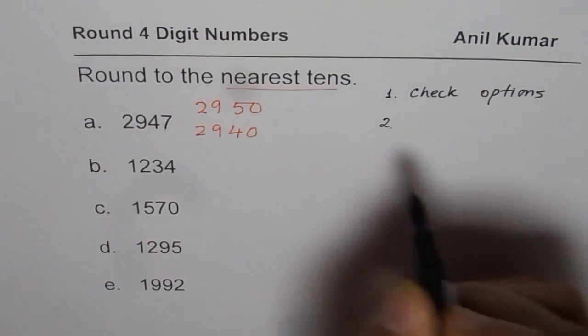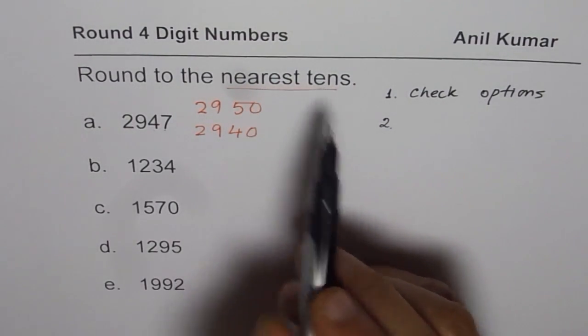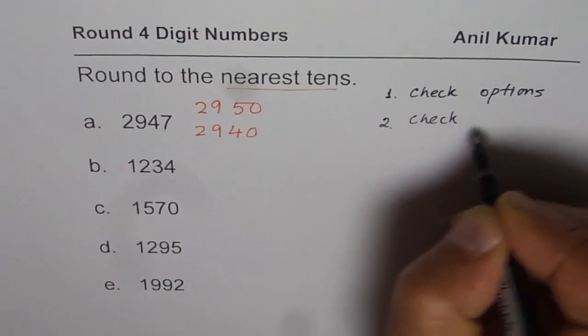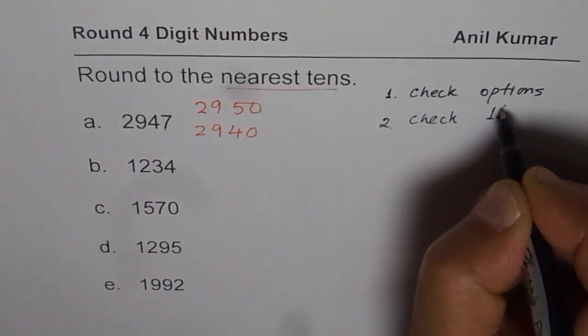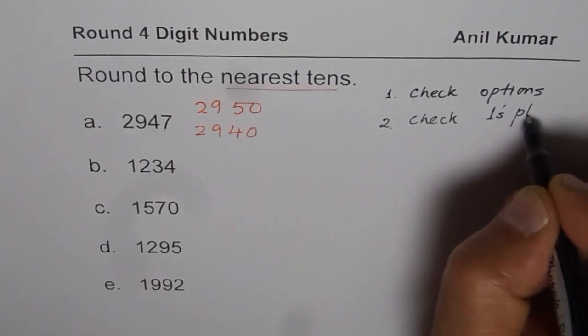And step number 2 is, you need to round to tens. So, check ones. Check ones. That means ones place. That means ones place.